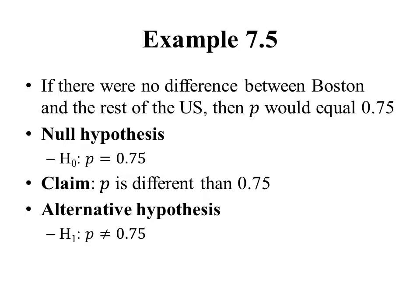In a claim about a population proportion, the null hypothesis is always the statement that P equals some number, and the alternative hypothesis is that P is not equal to that number, P is greater than that number, or P is less than that number — the same basic forms as a claim about a population mean, but here we're dealing with a proportion. This is going to be a two-tailed test because we have a not-equal-to sign in our alternative hypothesis.